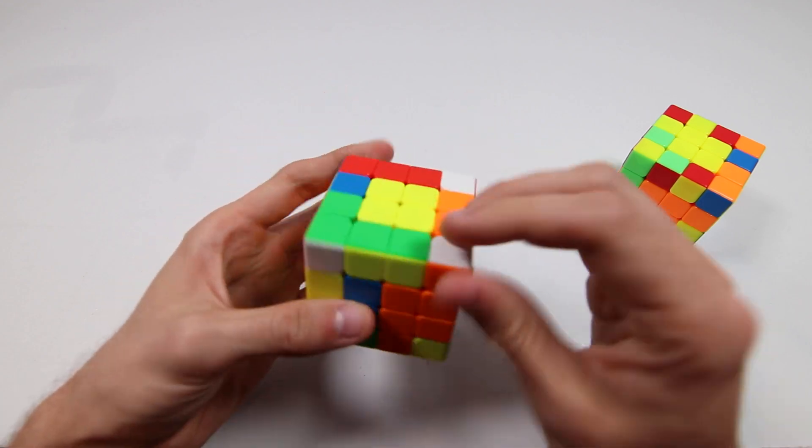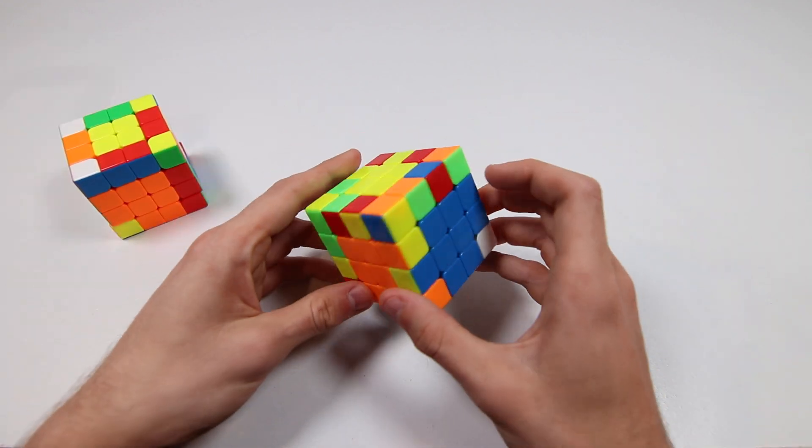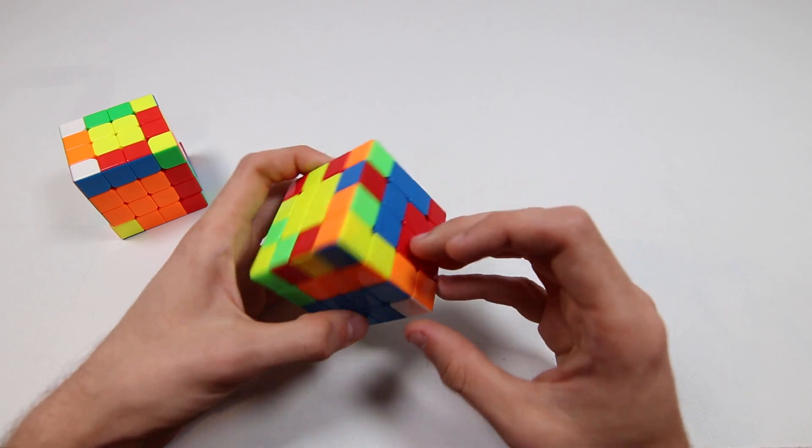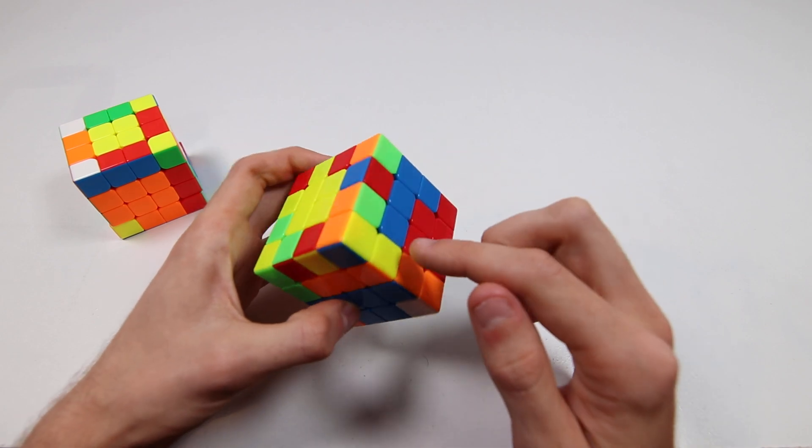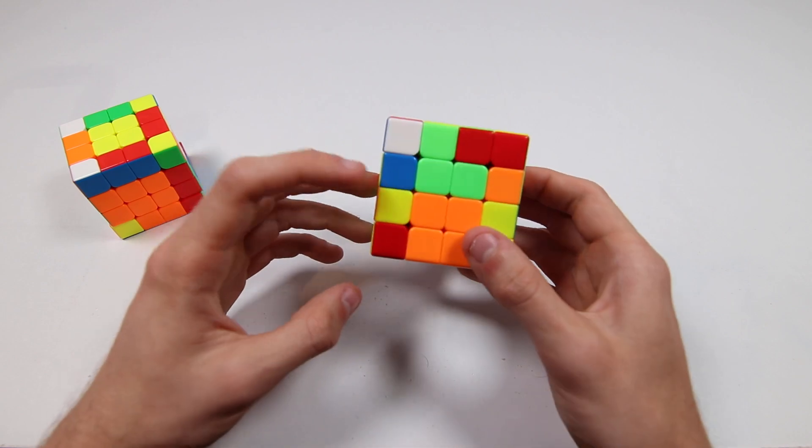Whereas if you have this version, so we start with wide u prime, and then this blue orange is our first edge, and now we're looking for yellow and orange, so now this one's here.